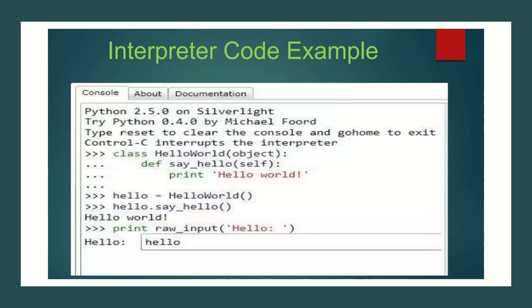Here is a code for the interpreter written in Python — a 'hello world' example using print and raw input. After pressing enter, 'hello' appears, demonstrating line by line execution of the code. Basically, in a compiler the entire program is processed — like a paragraph format — but in the interpreter, there is no paragraph; only single line by line execution of the program.